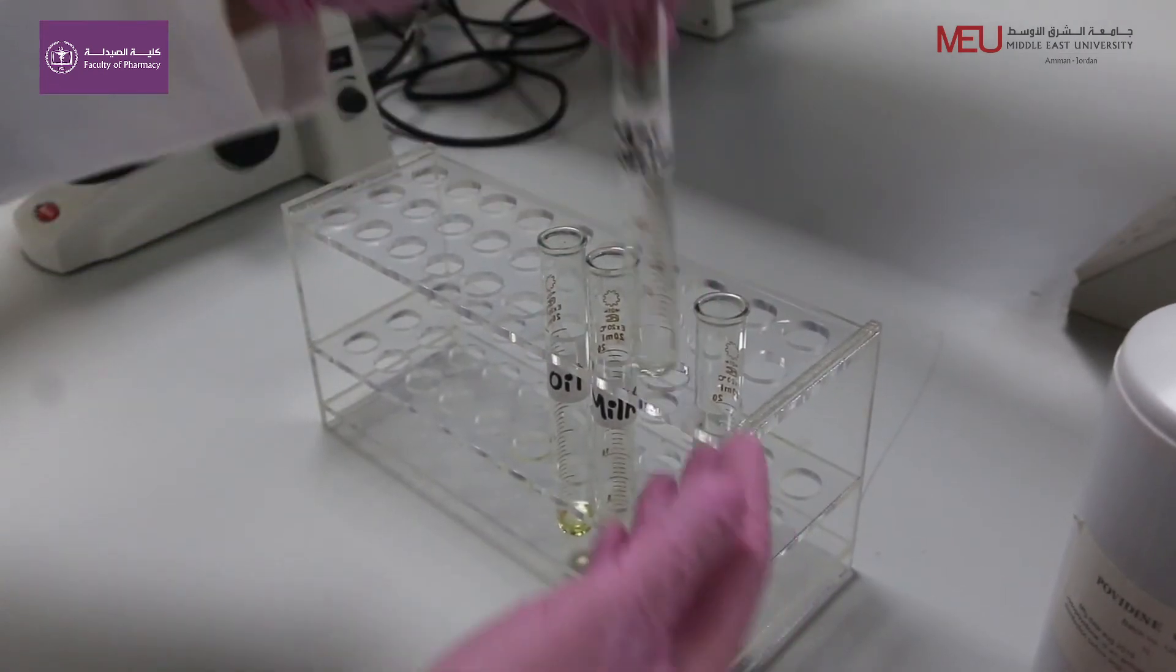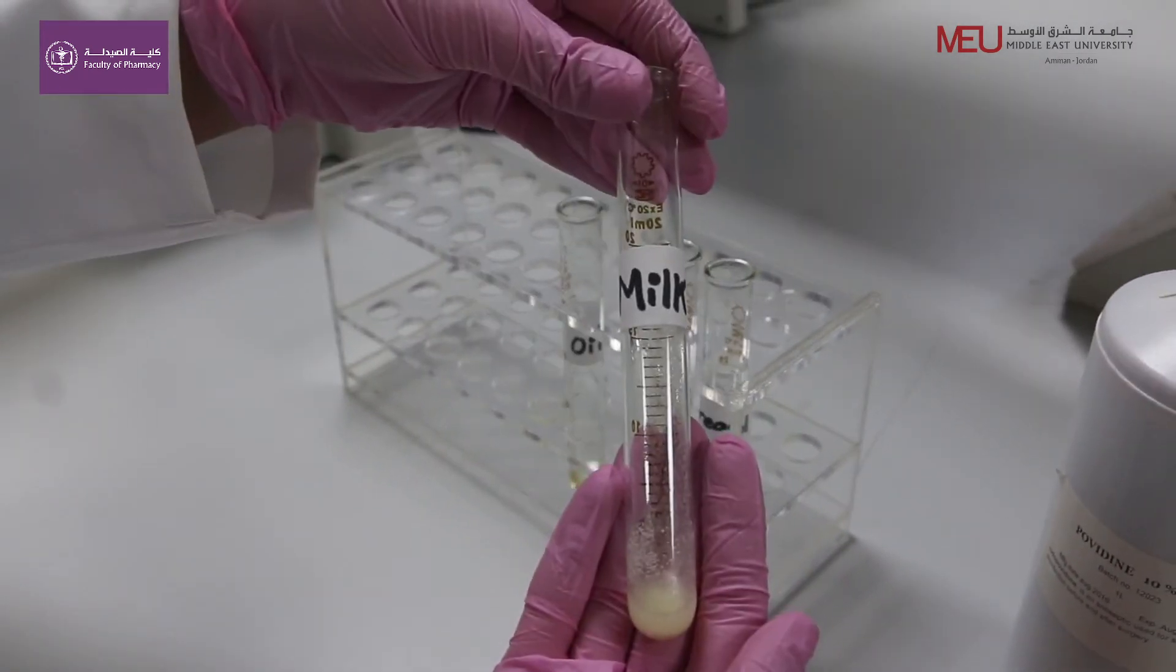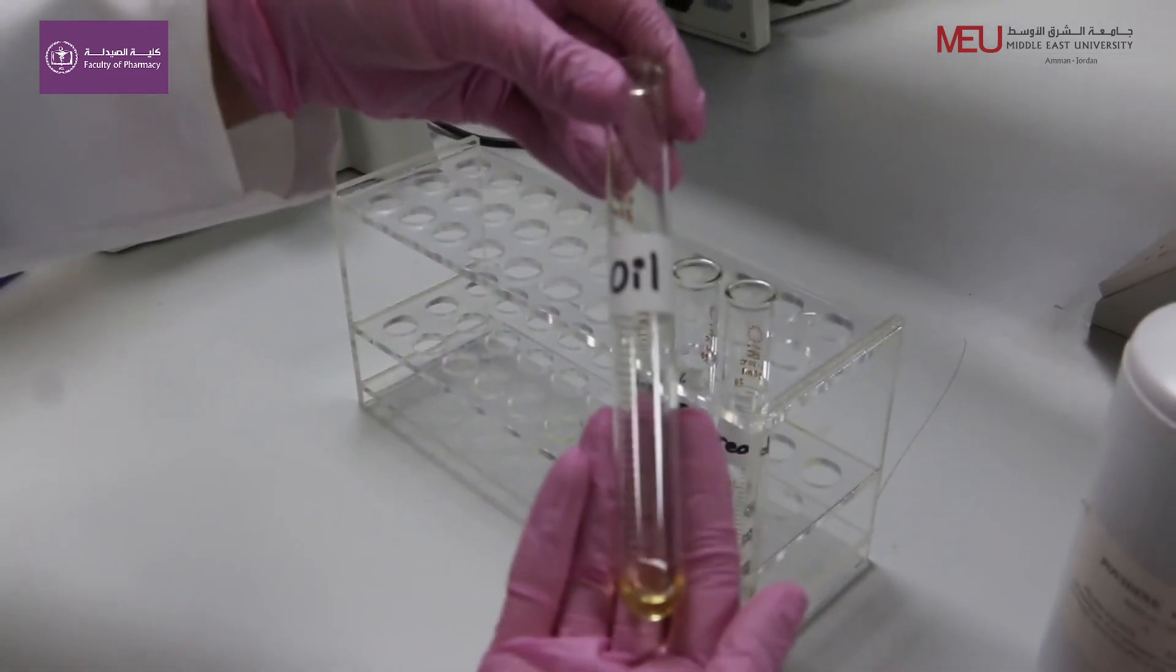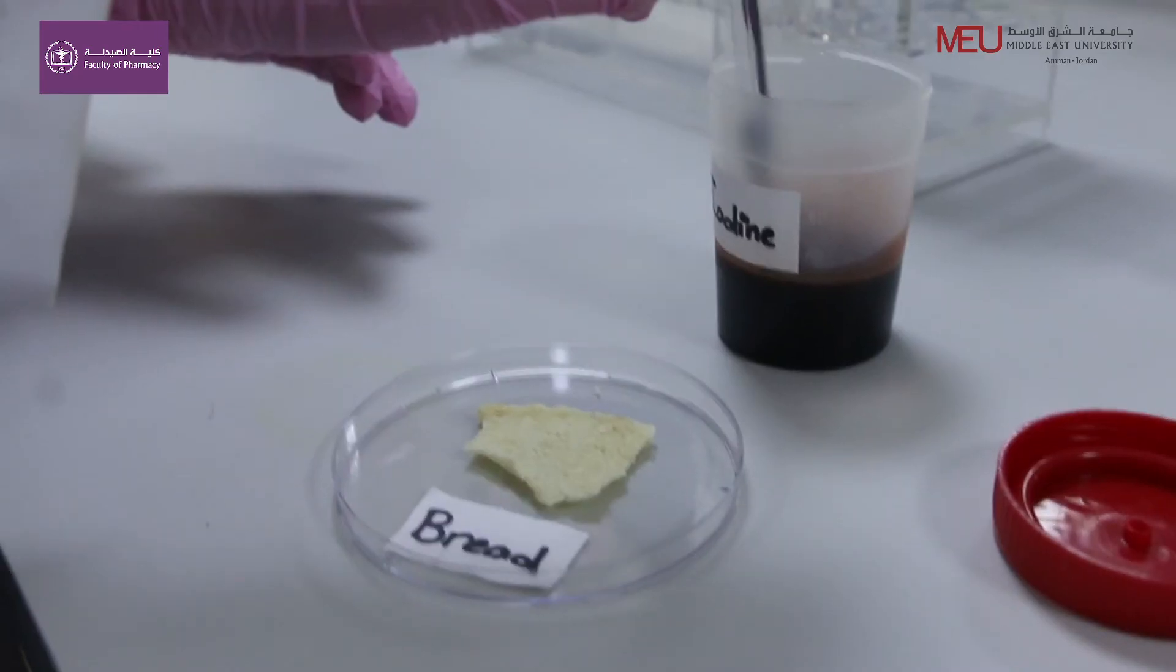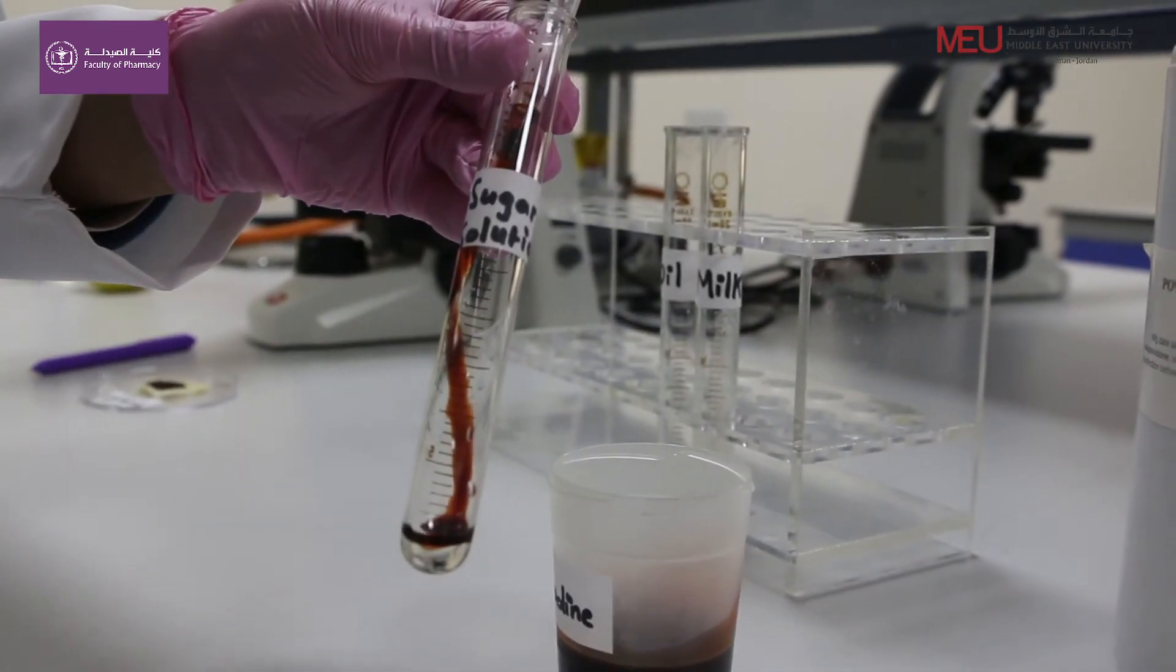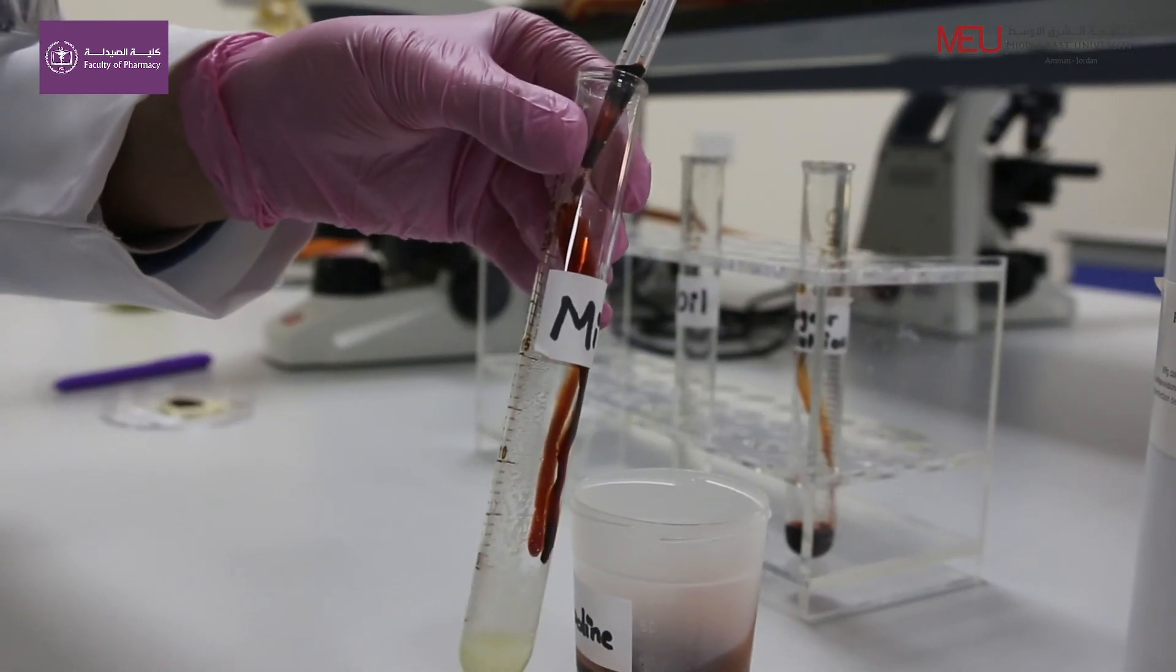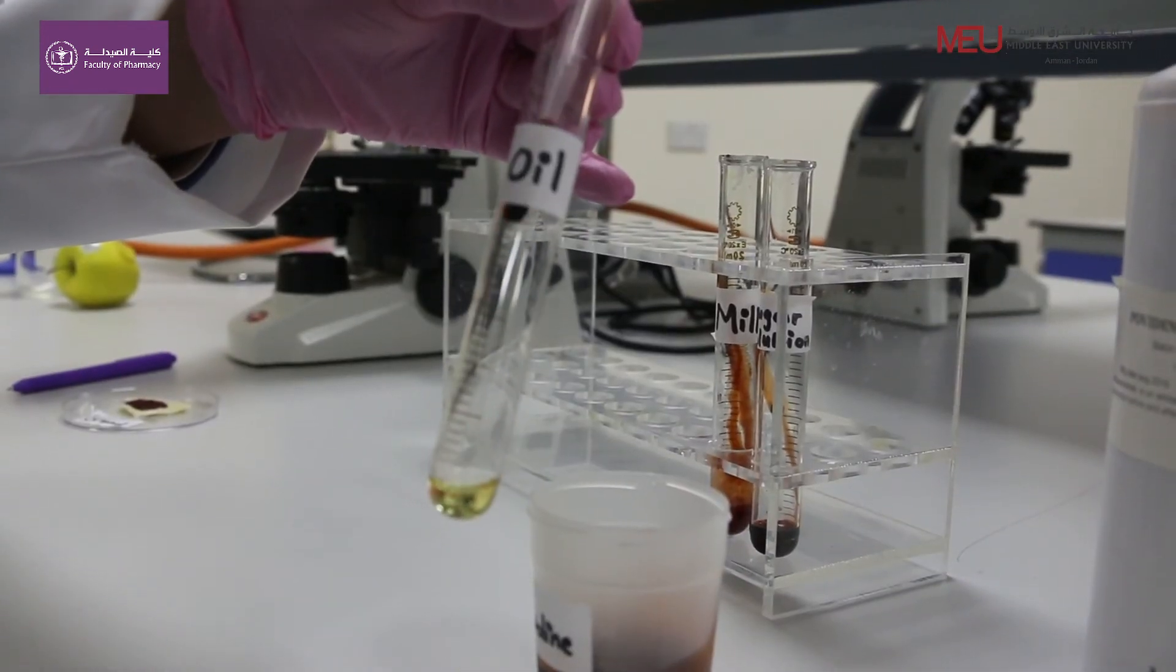In each test tube place 1 ml white sugar solution, 1 ml milk, 1 ml oil, and place bread pieces on a petri dish. Place one or two drops of iodine solution on each food item and observe the color change.